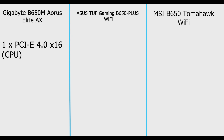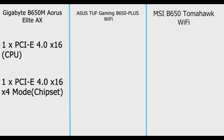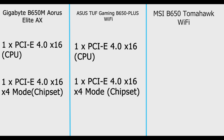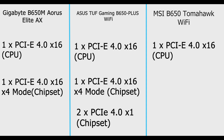For PCIe slots, Gigabyte has one PCIe x16 slot from the CPU supporting PCIe 4.0 running at x16 mode, and one PCIe x16 slot supporting PCIe 4.0 running at x4 from the chipset. ASUS has one PCIe 4.0 x16 from CPU, one PCIe 4.0 x16 running at x4 from chipset, and two PCIe 4.0 x1 slots from chipset. MSI has two PCIe 4.0 x16 slots and one PCIe slot — slot one supports x16 from CPU, slot two supports x2 from chipset, and slot three is PCIe 3.0 x1 from chipset.